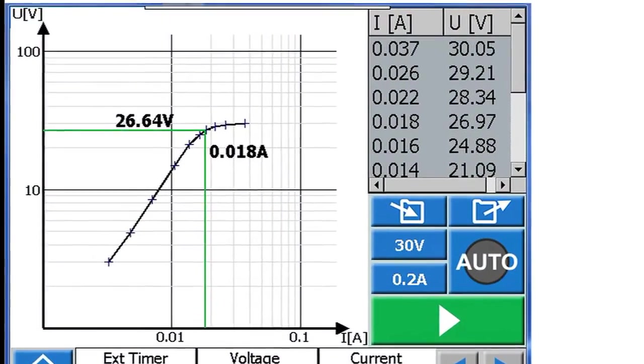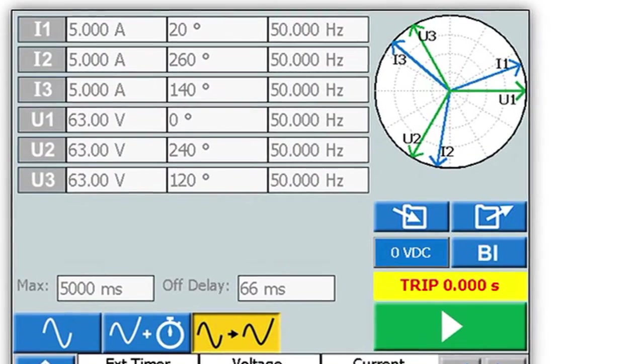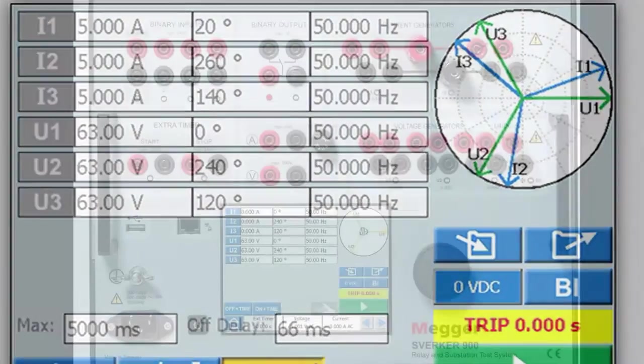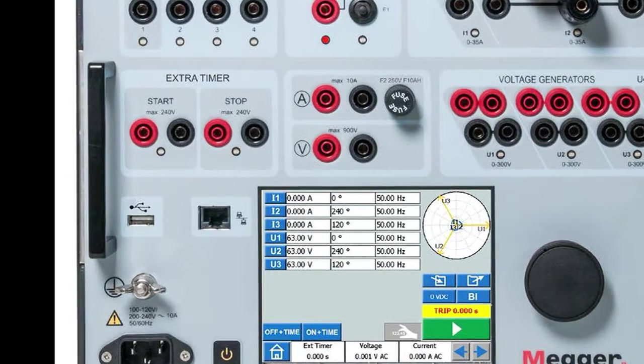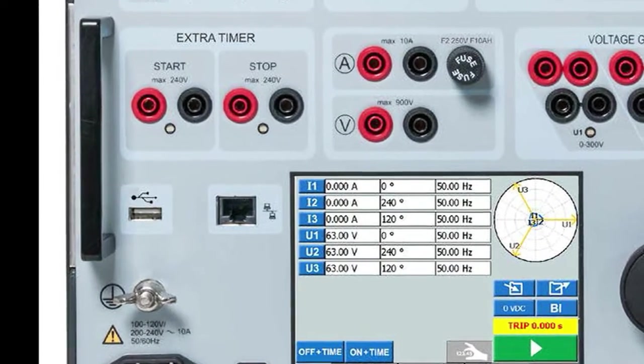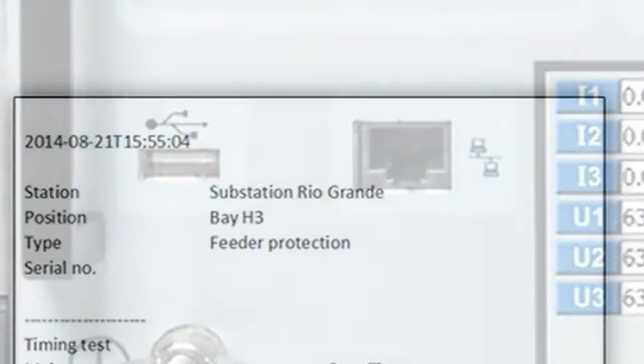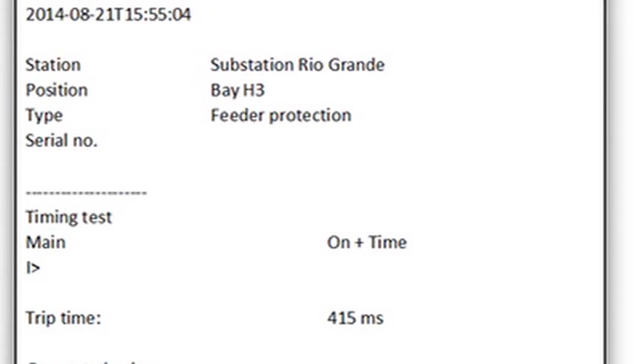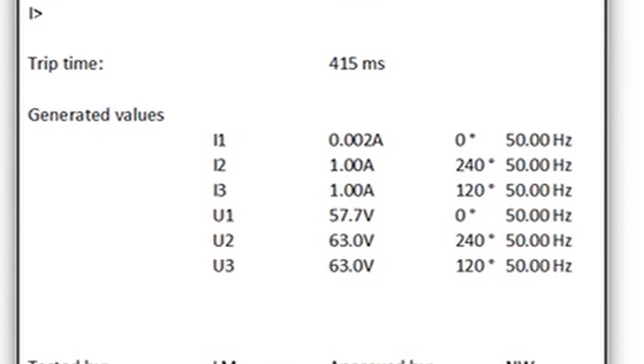Intuitive menu screens and touchscreen buttons are provided to quickly and easily select the desired test function. The front HMI also includes non-volatile built-in data storage for saving tests and test results. By using the USB port, test files and results can be transferred between the Sverker 900 and a PC. Test files are saved in CSV format for use with Excel to create reports.